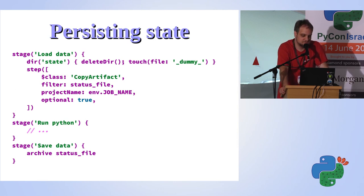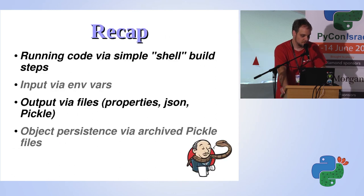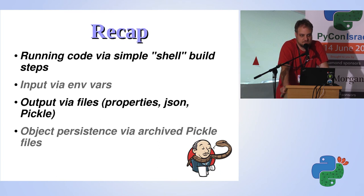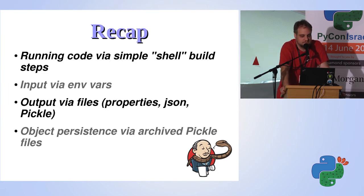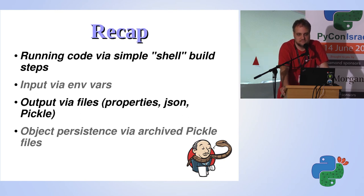One thing to note: that 'delete your state file' thing at the beginning — you need to make sure you don't have state leaking from other jobs that may have run on the same build slave, so clean up before you begin. So to recap: you can run Python code using Jenkins's basic shell functionality; you get input via environment variables; you get output by creating files; you can use JSON to pass stuff into Groovy; you can use pickle to save objects; property files work well since a lot of Jenkins plugins understand them; and you do object persistence with archived pickle files.